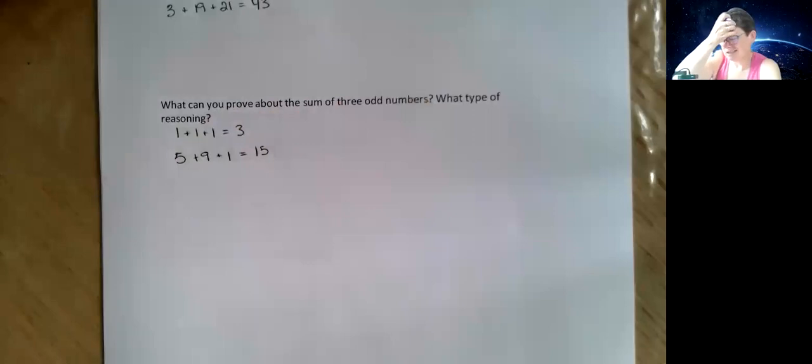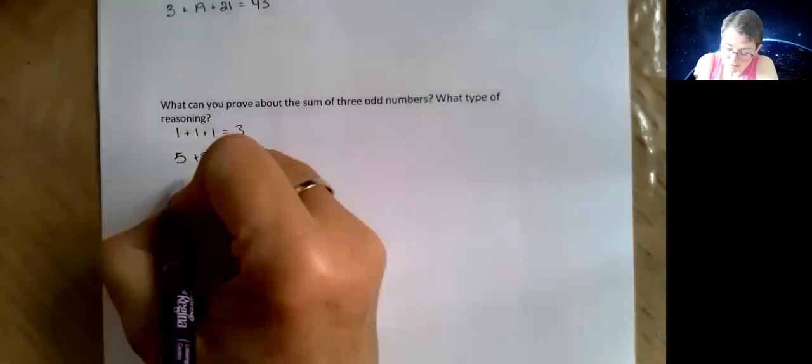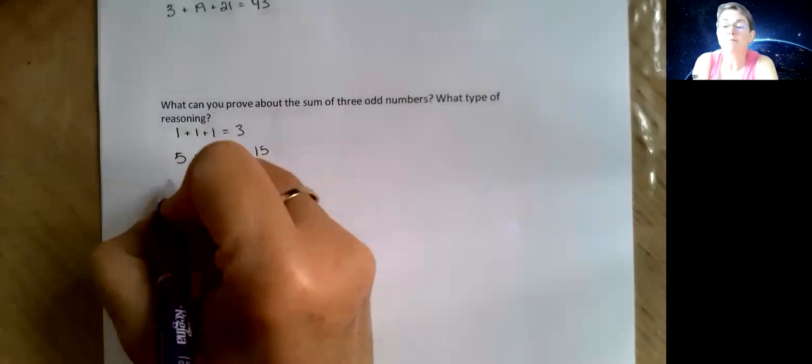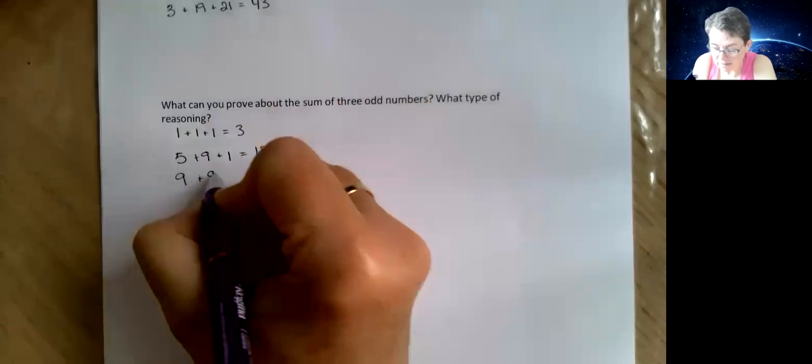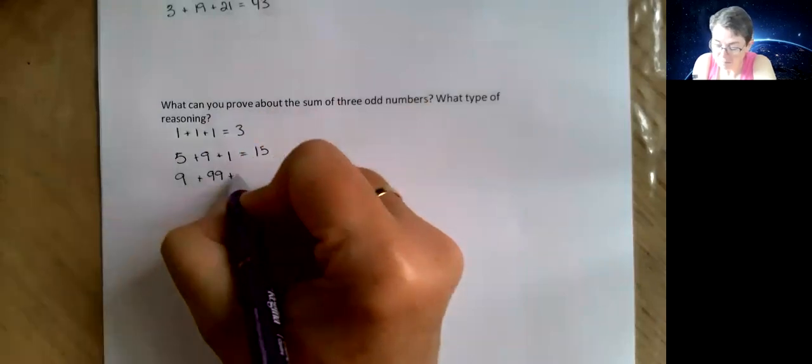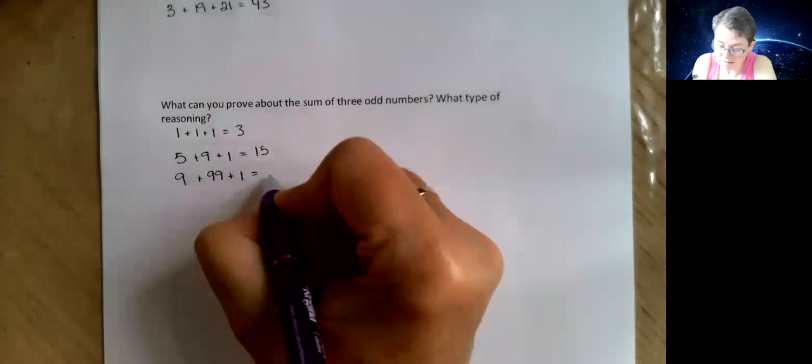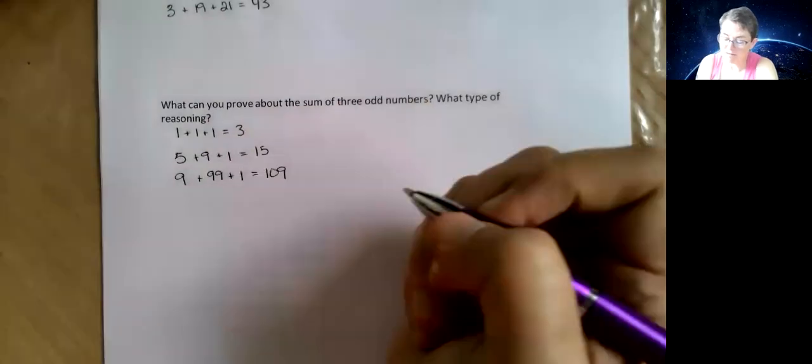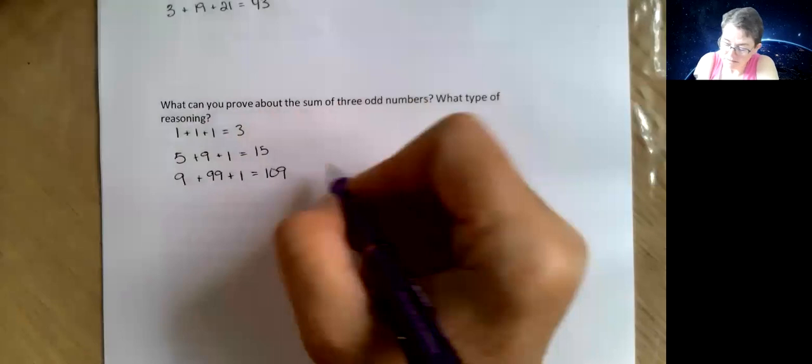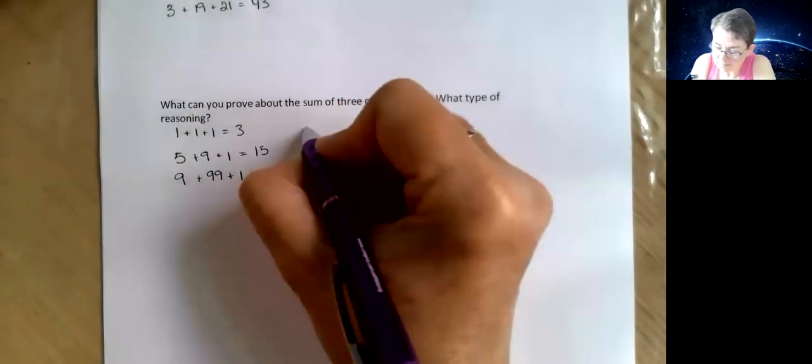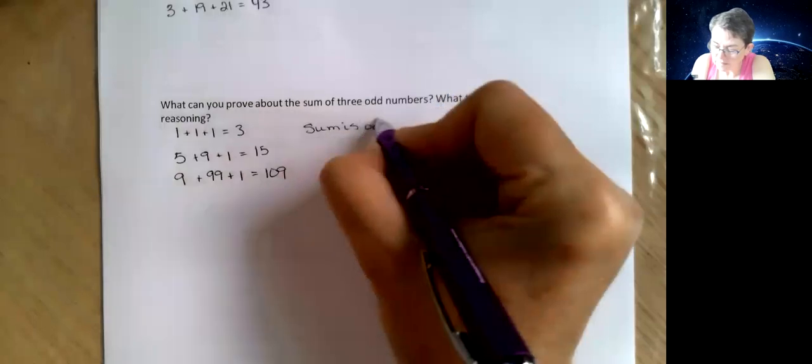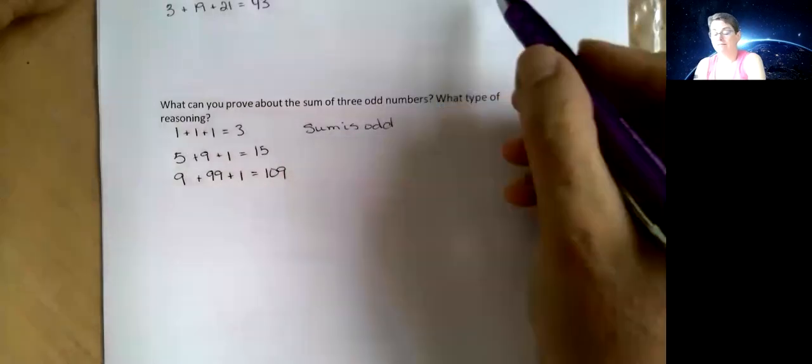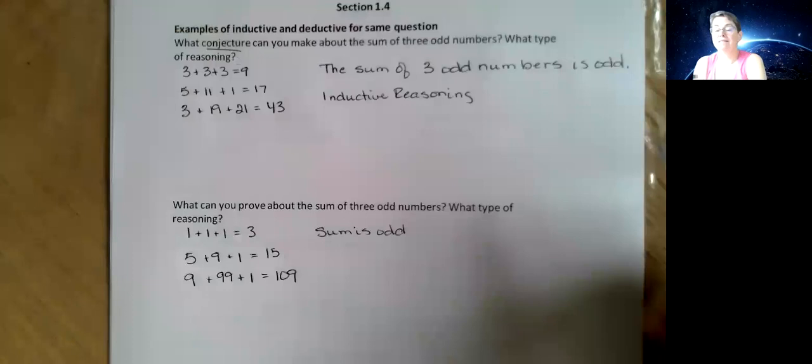I don't really need to do this because I already know what the answer is, but that's okay, I want to show you the absolute best that I can. 9 plus 99 plus 1 equals 109. All right, so we can see that the answer is odd, which is, yeah, we did a conjecture—that was it. But now we have to prove it.